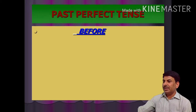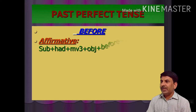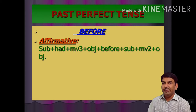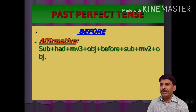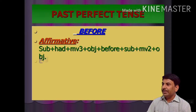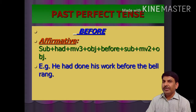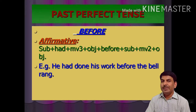First, the affirmative sentence. In past perfect tense, the affirmative sentence structure is: subject + had + third form of the main verb + object + before + another subject + second form of the main verb + object. For example: 'He had done his work before the bell rang.' The first clause is in past perfect tense and the second clause is in simple past tense.